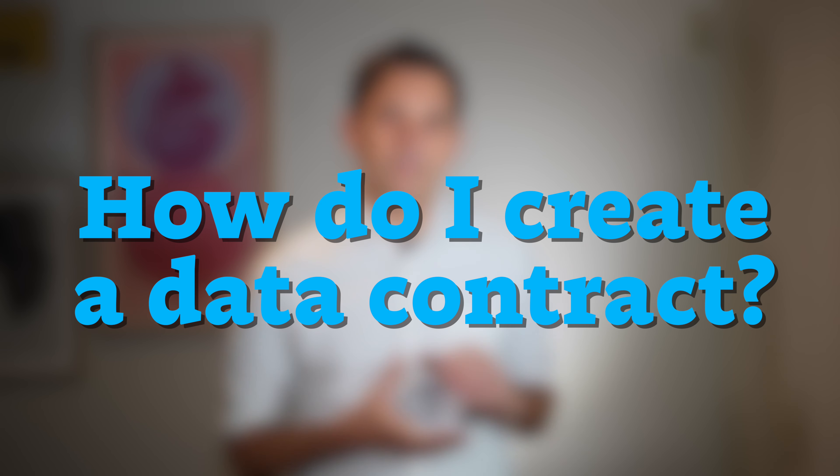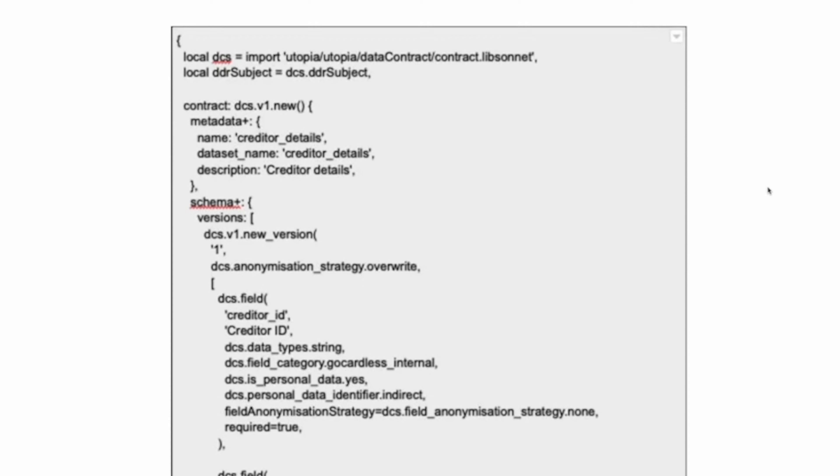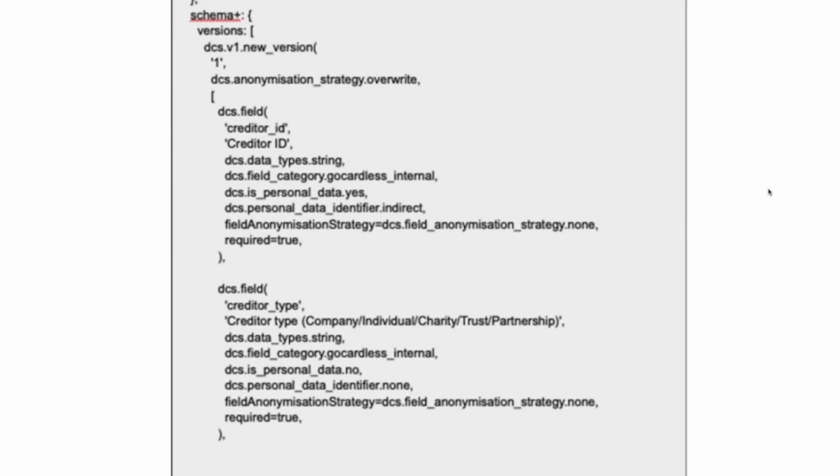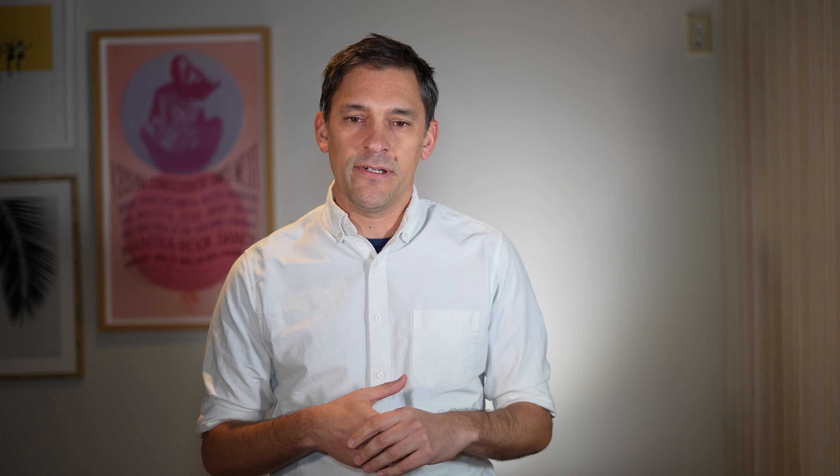At its primitive level, this can start with some definition in a Google document. But really, we see this come to life often through a JSON format, Avro, or Protobuf. And then often attached to that, you have a schema registry where you're actually reading and writing changes to the contract.